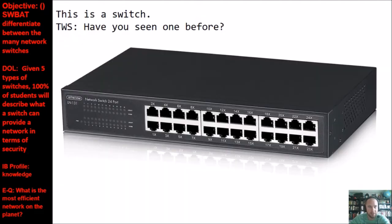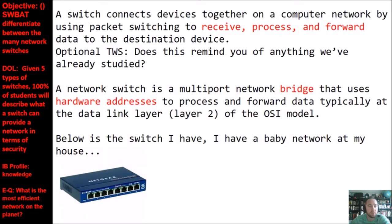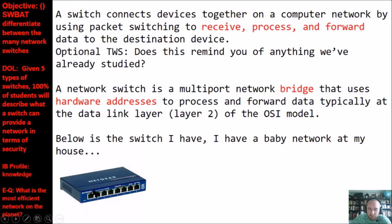This is a switch. Have you ever seen one before? If yes, can you remember where? What a switch does is connect devices on a computer network by using packet switching to receive, process, and forward data to the destination device. It's not just a dumb box — once data comes in, it processes that data and forwards it to wherever it's supposed to go. It needs to process it in order to know where to forward it.